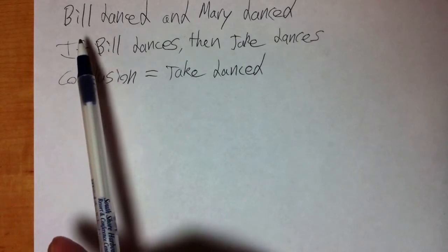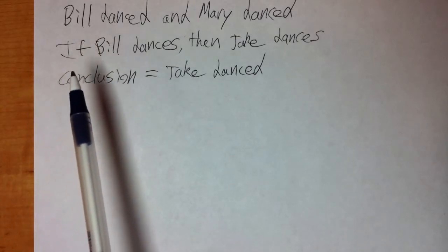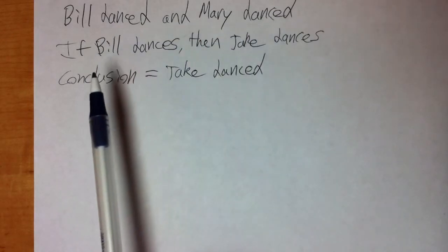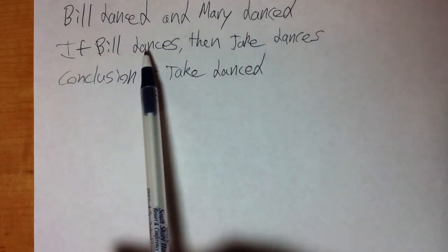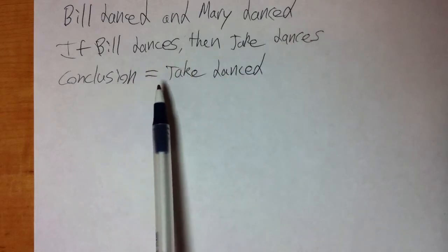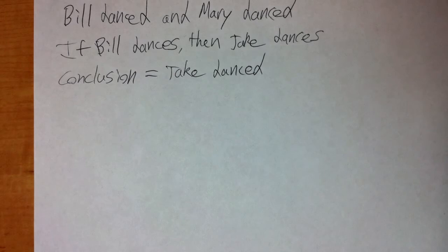Let's say we're given these premises: Bill danced and Mary danced, that's premise number one. If Bill dances then Jake dances, premise number two. And our conclusion: Jake danced.